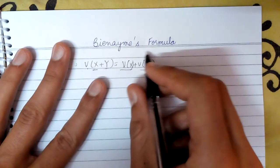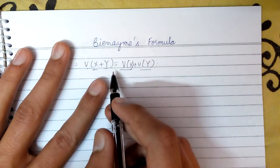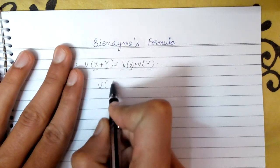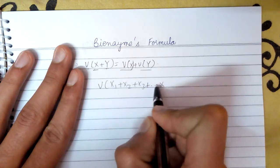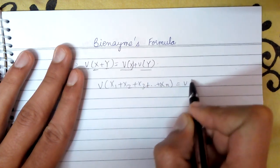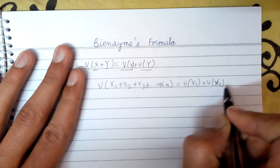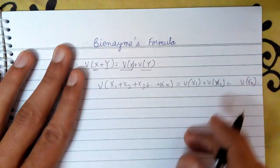So this is the Bienayme's formula and we can apply it to a lot of different variables which are independent and random. So like V of X1 plus X2 plus X3 plus up till plus Xn is equal to V of X1 plus V of X2 plus up till V of Xn. So this is the extension to n variables.